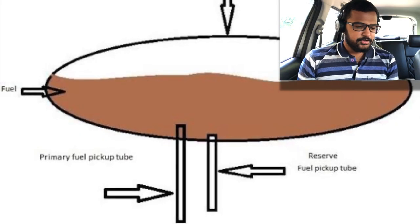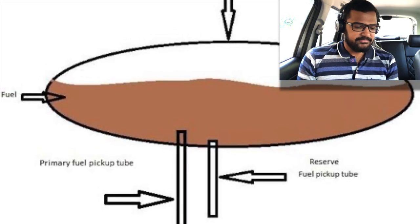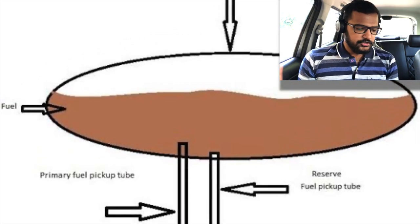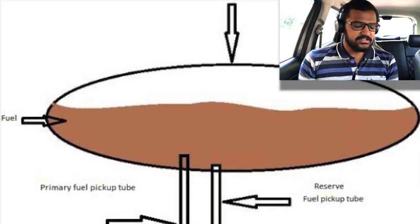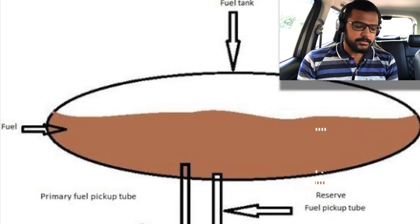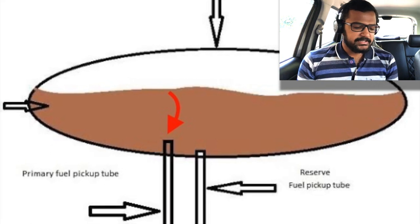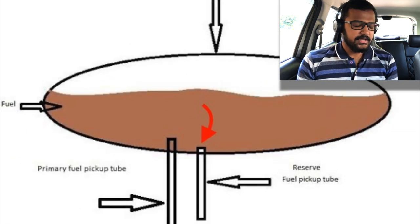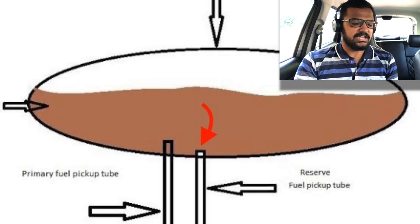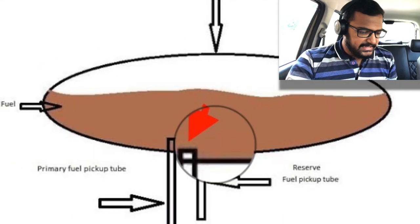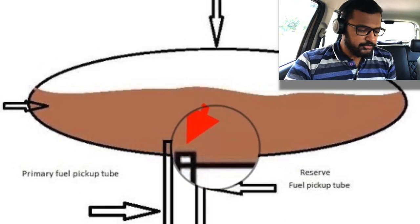As bonus content, let's see how a petrol tank actually operates. This is a rough diagram of a fuel tank. There are two tubes: one main tube and one reserve tube. This is the petcock, which controls the tube flow. About 90% of the petrol flows through the main tube. When the fuel level reaches the bottom of the main tube, that remaining fuel is the reserve petrol.